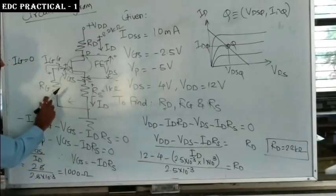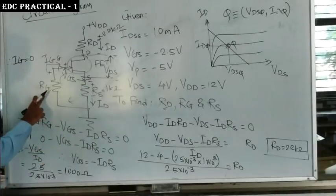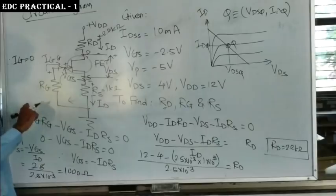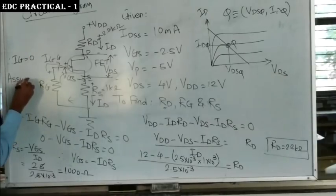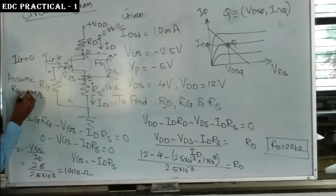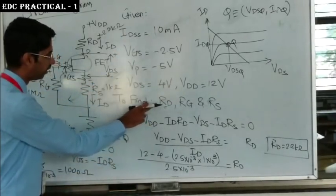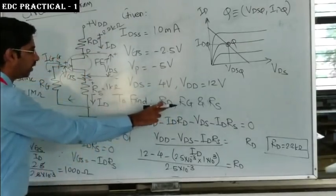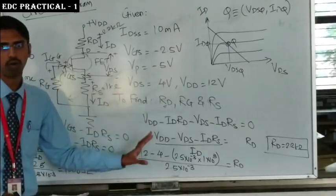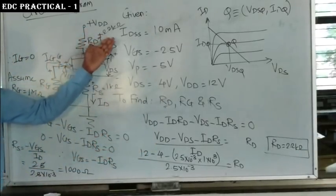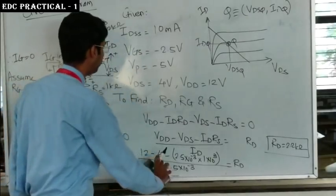Next is RG, which is the self-bias resistor. Its value must be very high because the input impedance of a FET is very high, and RG acts as the input impedance in our circuit. So we assume RG = 1 MΩ. We have now designed the circuit: RD = 2.2 kΩ, RG = 1 MΩ, RS = 1 kΩ.